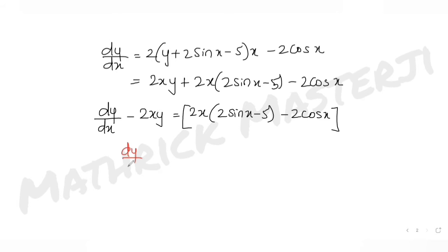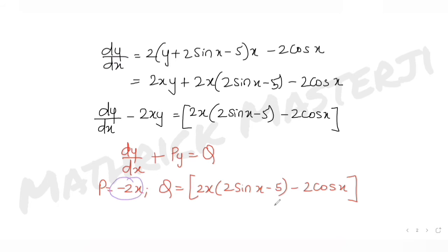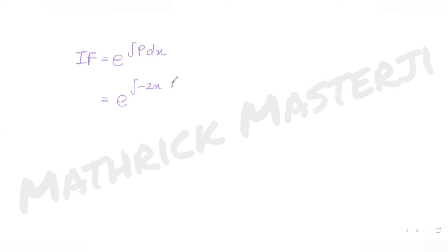Comparing with the standard linear ODE form dy/dx + Py = Q, I get P = −2x and Q = 2x(2sin(x) − 5) − 2cos(x). Now I find the integrating factor: e^(∫P dx) = e^(∫−2x dx) = e^(−x²). The 2s cancel, giving IF = e^(−x²).